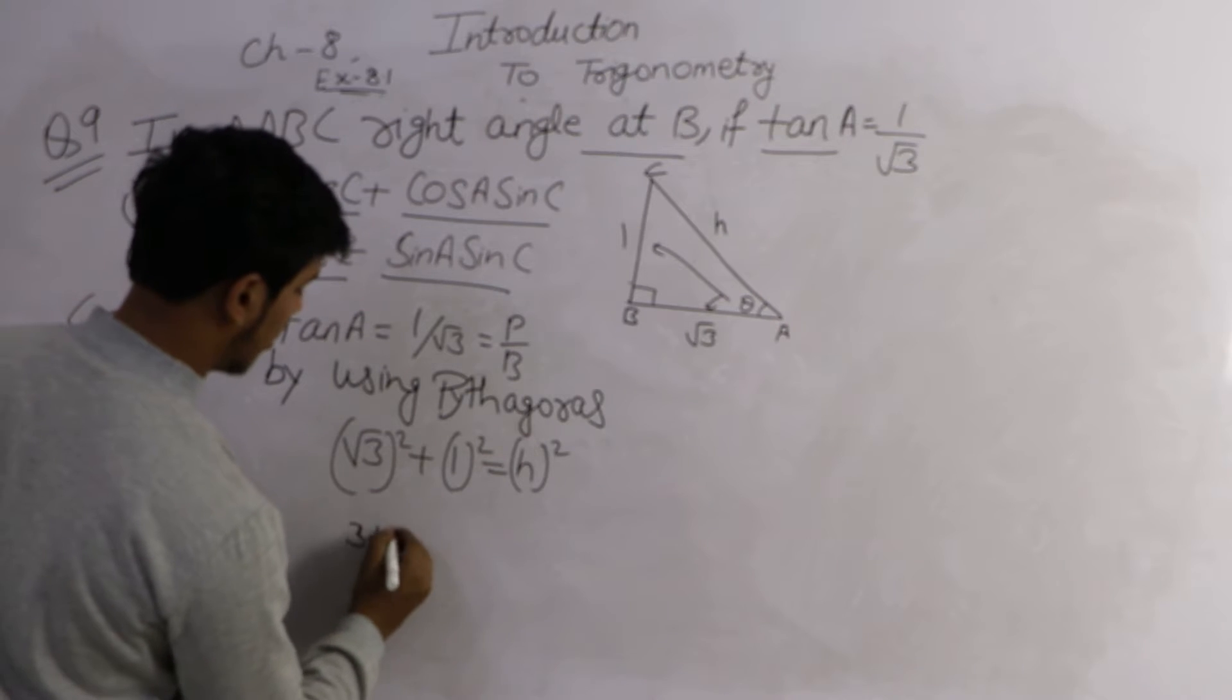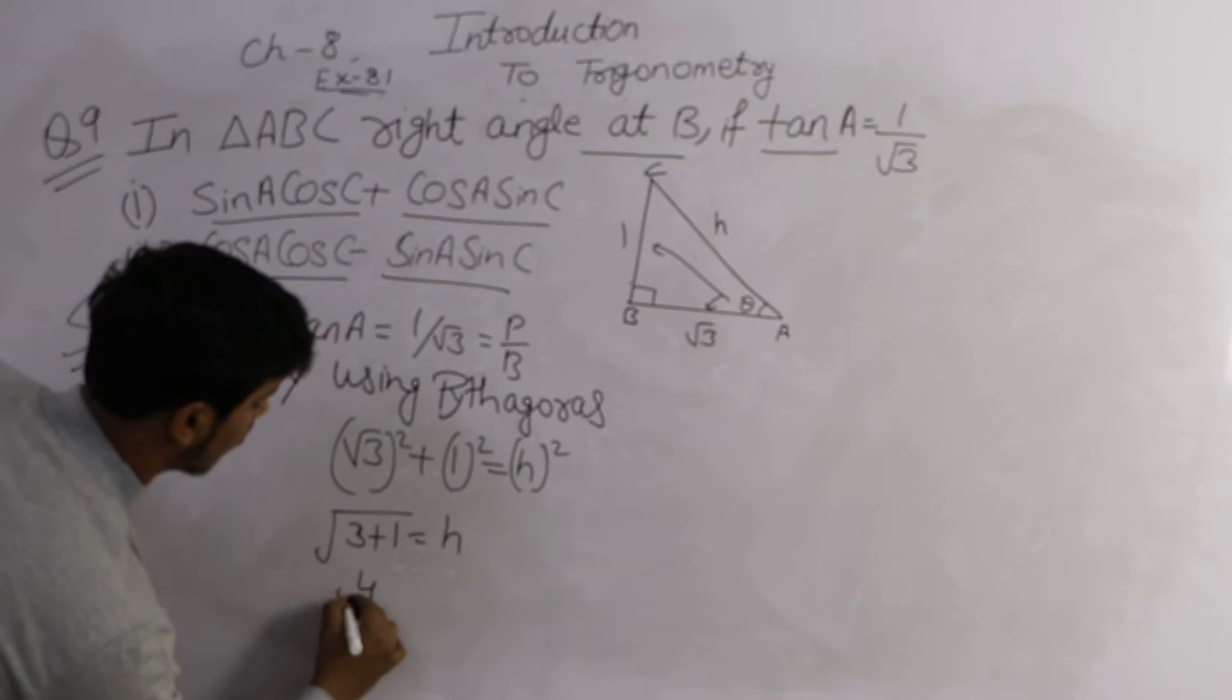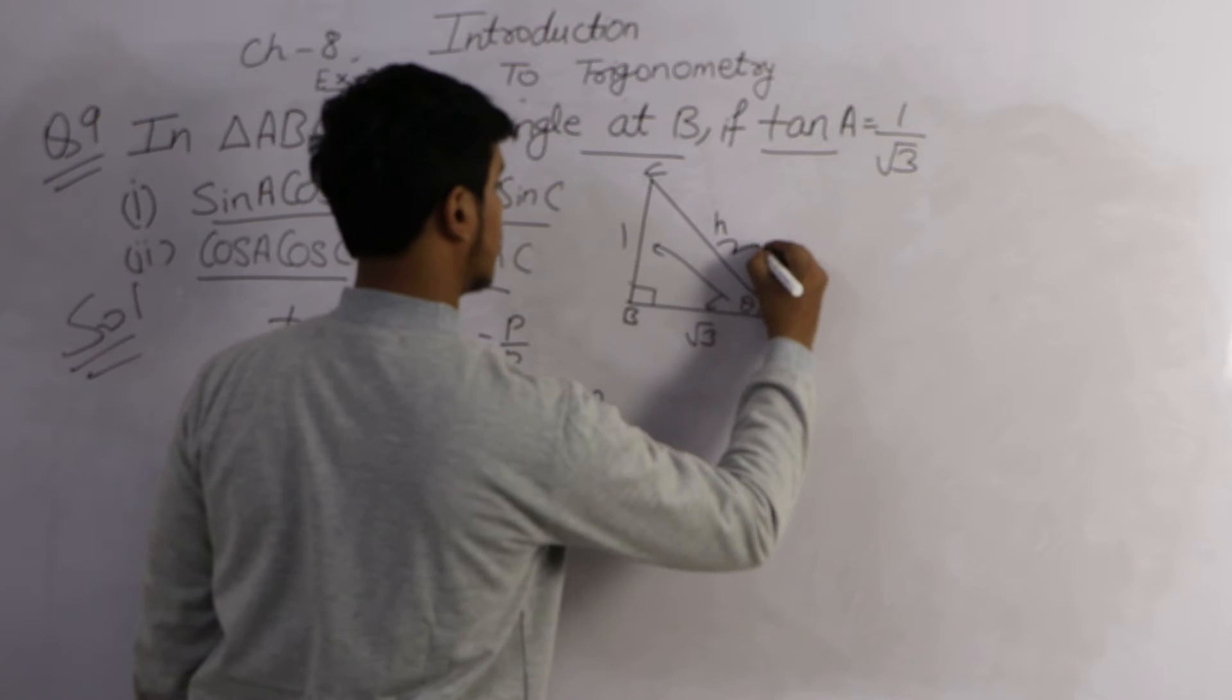Root 3 squared is 3 plus 1, under root gives hypotenuse under root 4, which is equal to 2. So the hypotenuse comes 2.